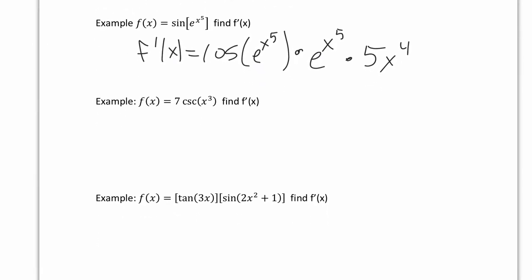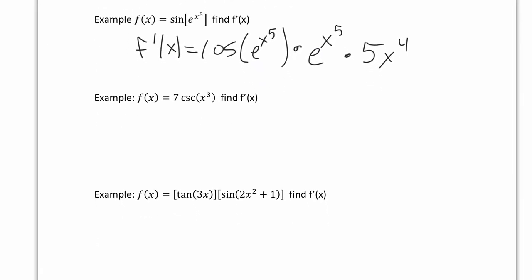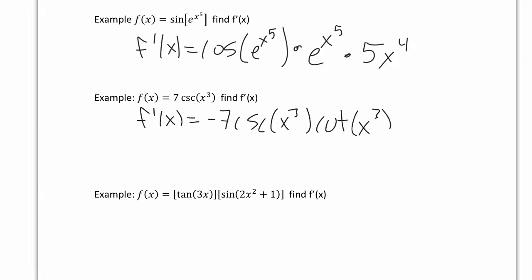Let's take a look at the next example. We have f prime of x equal to — the 7 is just a constant so we rewrite that. The derivative of cosecant is negative cosecant times cotangent, and the x cubed goes along for the ride. Then we multiply by the derivative of the inside, which is 3x squared.